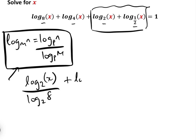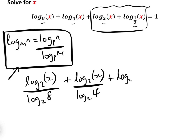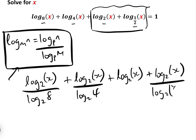Then log to the base four of x is log to the base two of x over log to the base two of four. We'll leave log to the base two of x as it is since it's already in the right base. And log to the base half of x is equal to log to the base two of x over log to the base two of a half. All of that equals one.